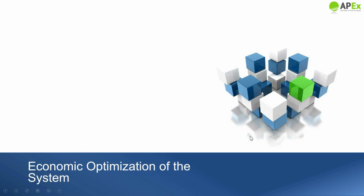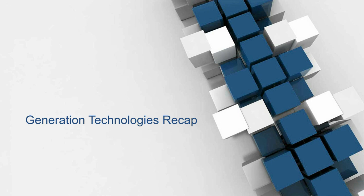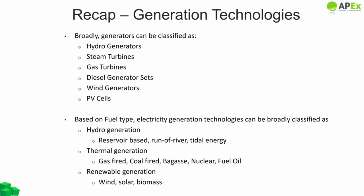Hello and good afternoon everybody. Welcome to our lecture series of EMDP. Today we'll be discussing the economic optimization of power systems. Before we start, let's have a quick recap from our generation technology session last month. We studied that generation technologies can be broadly classified as hydro generators and, among thermal categories, steam turbines, gas turbines, and DG sets. We also have VRE categories with wind and PV cells. Based on fuel type, these include reservoir-based or run-of-river hydro, coal-fired, gas-fired, nuclear, fuel-oil-fired power plants, and renewables such as wind, solar, and biomass.